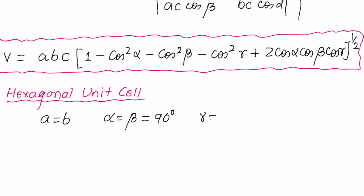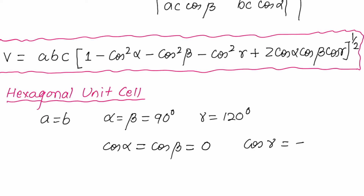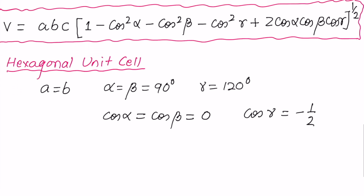And γ = 120°. So we have cosα = cosβ = 0, and cosγ = −1/2. Substituting these values into the general formula: